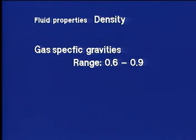Gas-specific gravities range in magnitude from about 0.6, which is pipeline quality, to 0.9, which represents a rich gas containing condensate.